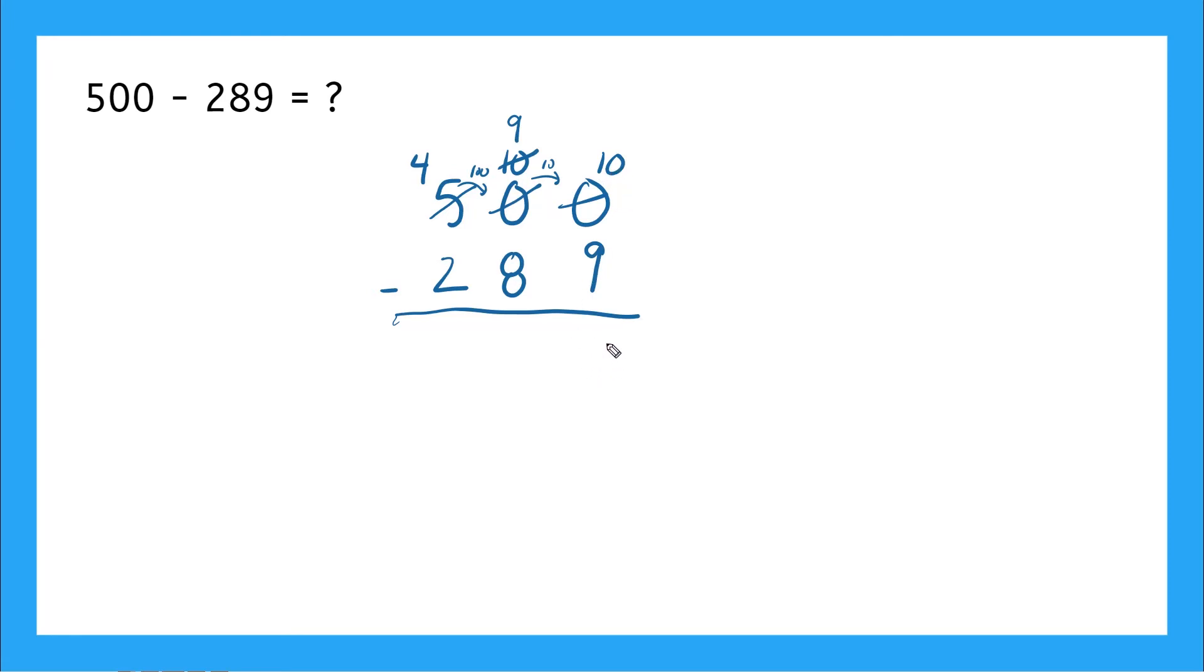10 minus nine, that leaves me with one. And I have nine minus eight, that also leaves me with a one. And then four minus two, that will give me two. So my answer here is 211. Good job.